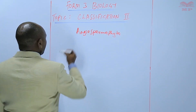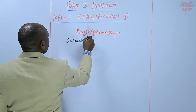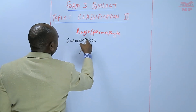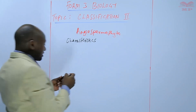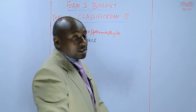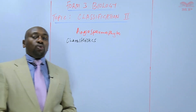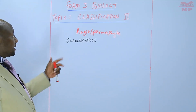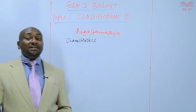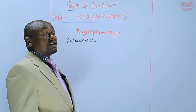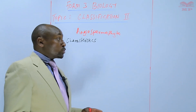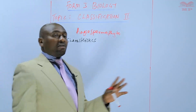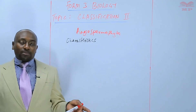The characteristics of the Angiospermophyta, what we commonly refer to as the angiosperms — these are the plants whose seeds are enclosed within the fruit, basically within the fruit wall, like the mangoes, the avocados, and those examples of those plants.